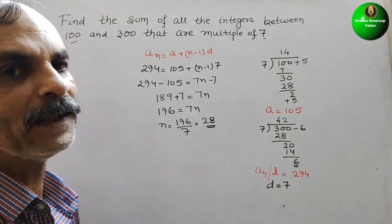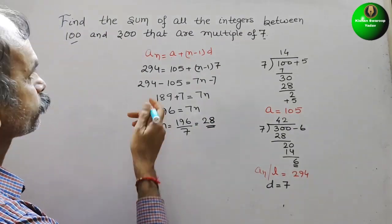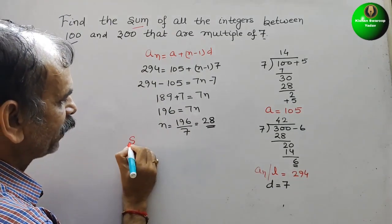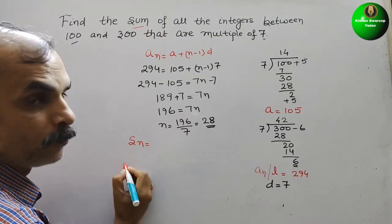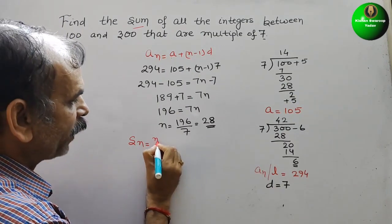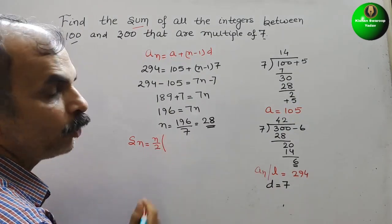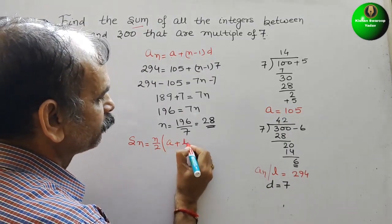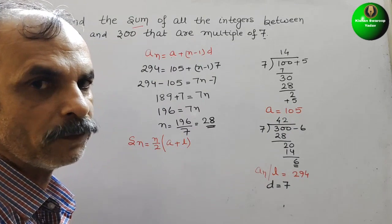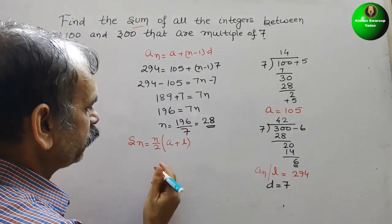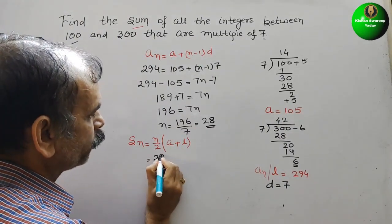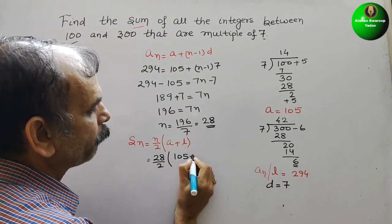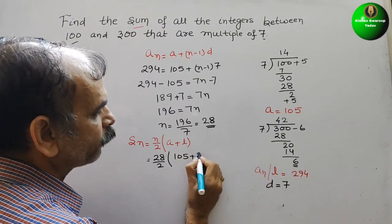Now, we have to find it out the sum. Sum. So sum formula. That is nothing but SN is equal to, what is that? N by 2. And here we know A also, L also. So here we will put A plus L. Now, solve this. So this will be your 28 by 2. And A will be your 105 plus L is your 294.